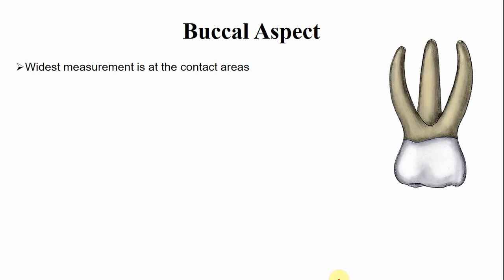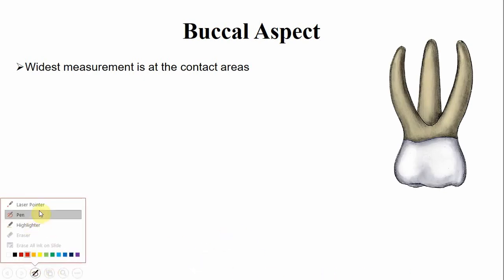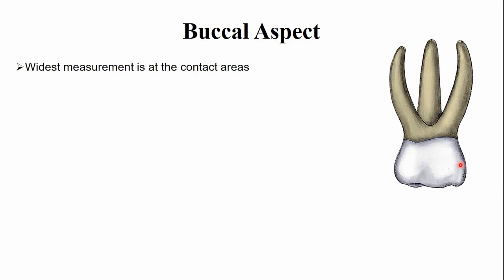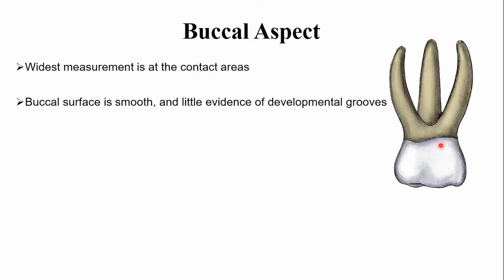From the buccal aspect, the widest mesiodistal measurement is at the contact areas, while the mesiodistal width is the narrowest at the cervical portion of the crown. Unlike the permanent molars, the buccal surface is smooth, with very little evidence of developmental grooves on the buccal side.